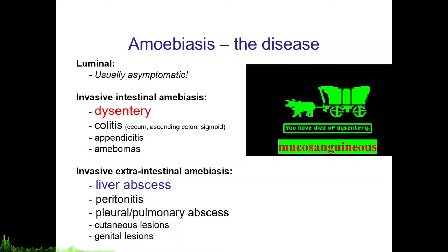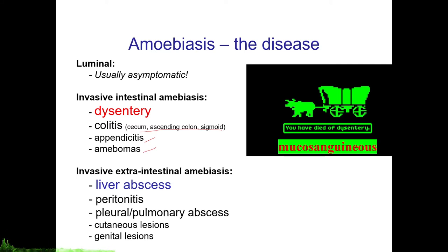Luminal amoebiasis is usually asymptomatic, while the invasive form of intestinal amoebiasis — called amoebic colitis — manifests with dysentery. The parts of the intestine it usually invades are the colon, the appendix, or sometimes they form amoebomas. Invasive extra-intestinal amoebiasis usually manifests as liver abscesses, sometimes amoebic peritonitis, pleuro-pulmonary abscesses, and in even rarer cases can extend to organs such as the skin or the genital region.